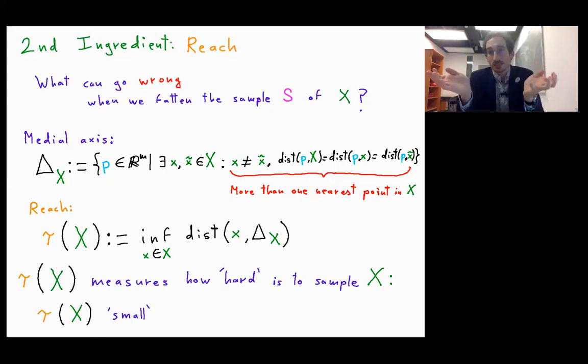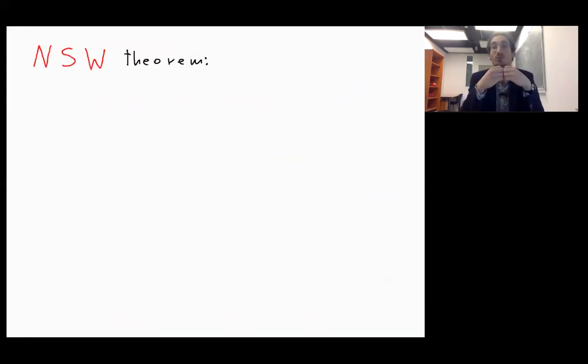In this sense, if the reach of X is small, then we will be saying that X is hard to sample. So now we have introduced the two ingredients.